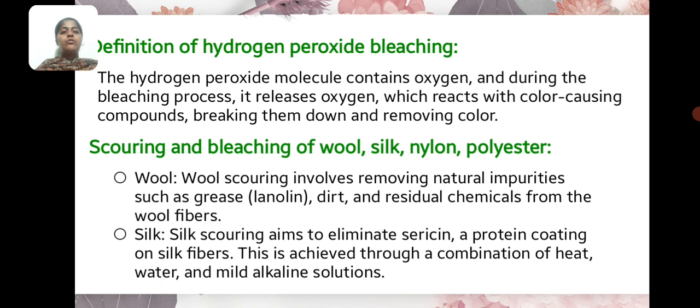Scouring and bleaching of wool, silk, nylon, and polyester. Wool: Wool scouring involves removing the natural impurities such as grease, dirt, and residual chemicals from the wool fabric.